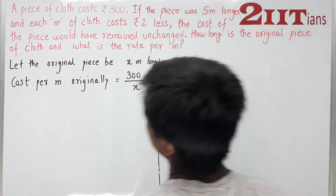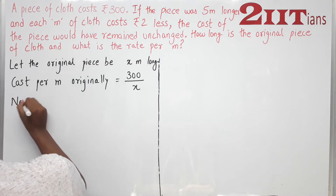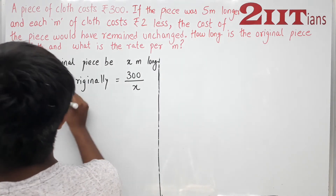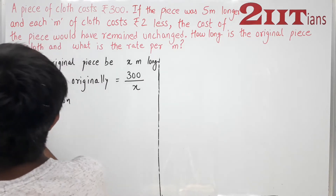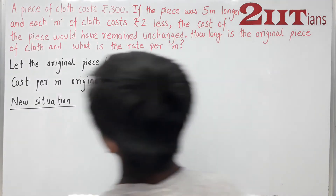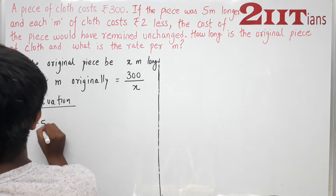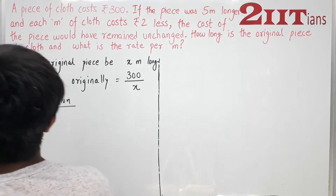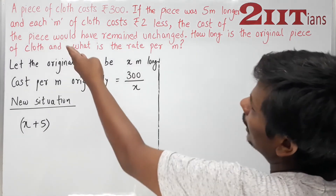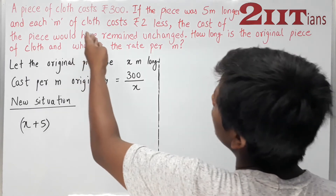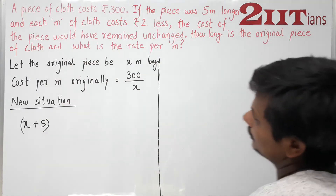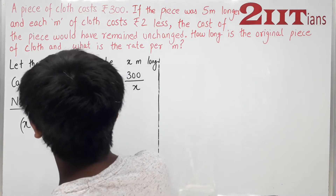New situation — this is a hypothetical situation we are thinking about. If the piece was 5 meters longer, the new length is (x + 5) meters, and each meter of cloth costs Rs. 2 less, so the new rate per meter is (300/x − 2).